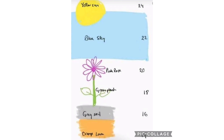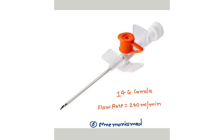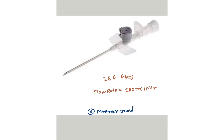Now we are looking at the actual cannulas. This is the 14 gauge cannula — its flow rate is 200–240 ml per minute. It is orange color. This cannula is most commonly asked in MCQs and is also used for clinical purposes.